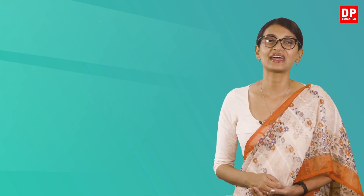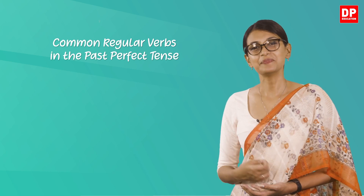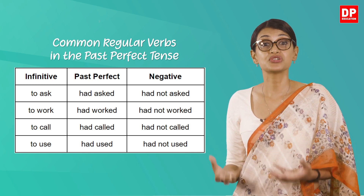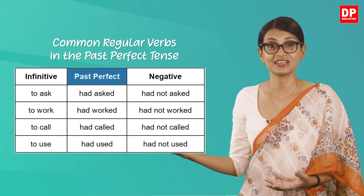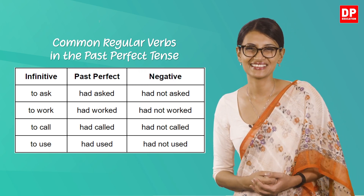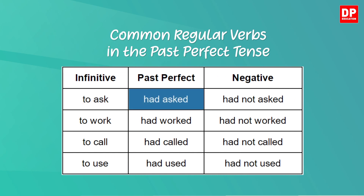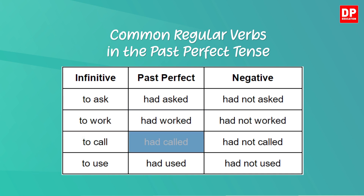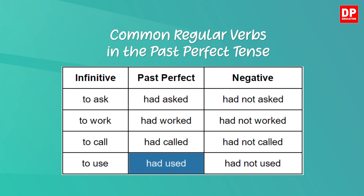Let's now look at some common regular verbs in the past perfect tense. The table shows the infinitive, the past perfect, and the negative of each verb. To ask: had asked / had not asked. To work: had worked / had not worked. To call: had called / had not called. To use: had used / had not used.